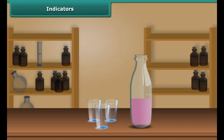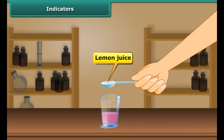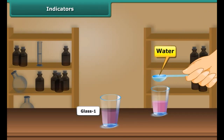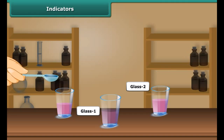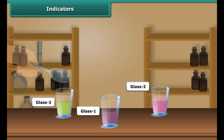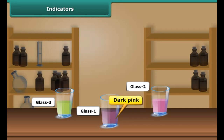Take a small amount of the indicator in three small glasses. Pour lemon juice in the first glass, water in the second glass, and soap solution in the third glass. In glass one, the color changes to dark pink — lemon juice is acidic in nature, which causes the change in color of the indicator.